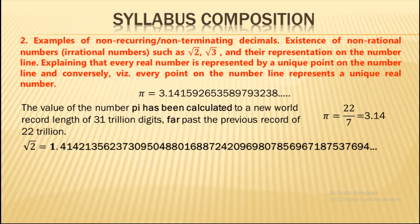Similarly, √2 — which we commonly know as approximately 1.414 — has been calculated much further. Even up to 50 decimal digits, it continues without terminating or repeating. Because its decimal expansion neither terminates nor repeats, √2 is called an irrational number.